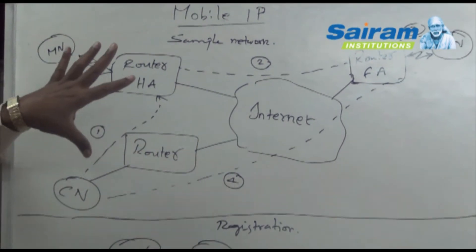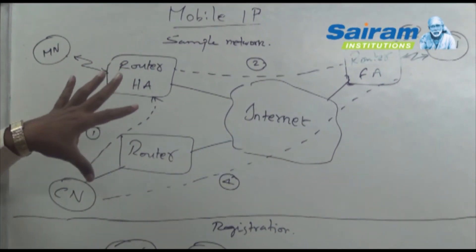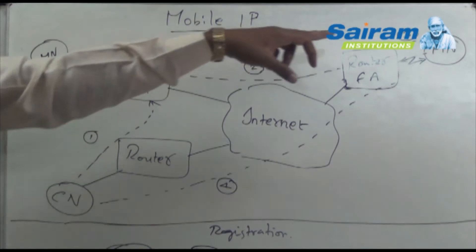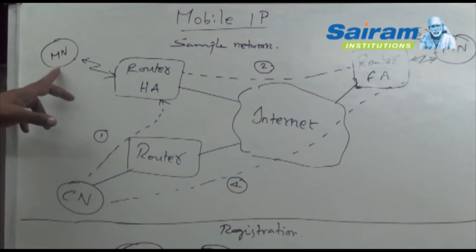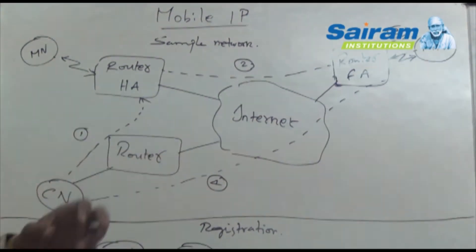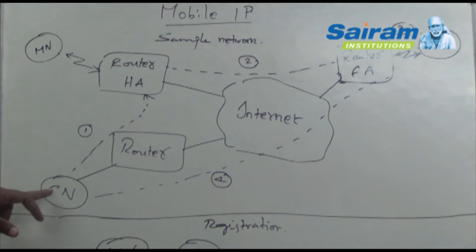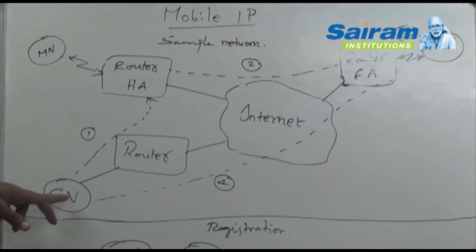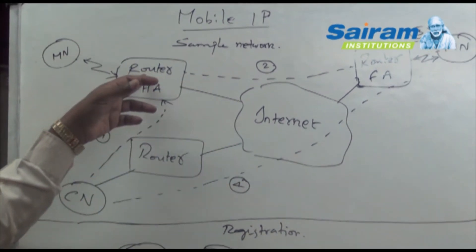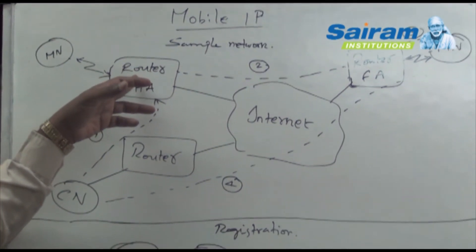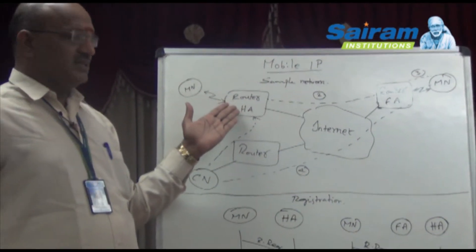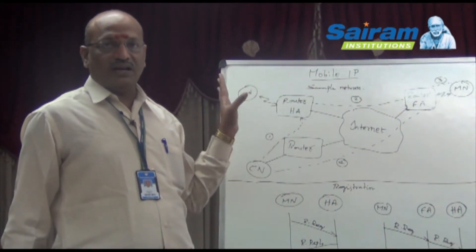There are four steps involved in communicating packets between CN and MN. Typically, when a mobile node moves from the home network to a foreign network, in step one, the corresponding node transmits packets through its router into the internet, which come to the home agent router. At this point, the mobile node has moved, so the home agent forms a tunneling and encapsulation concept, creating a route between the tunneling start point and the tunneling end point.